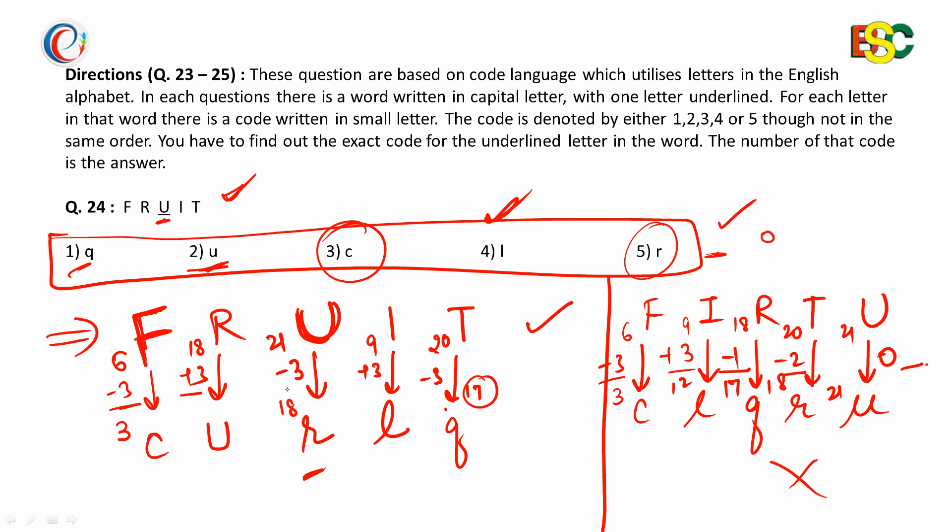This minus 3 plus 3 minus 3 plus 3 minus 3, it is making a meaningful pattern. So R must be the correct answer to this question. That is, option 5 is the correct answer.